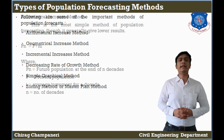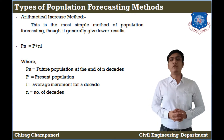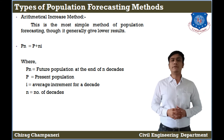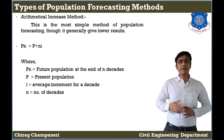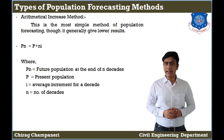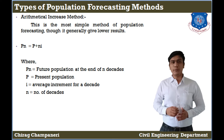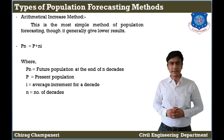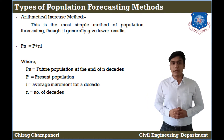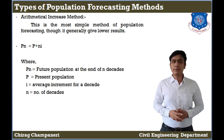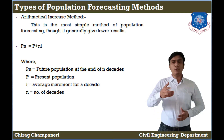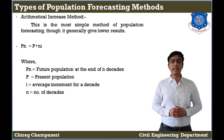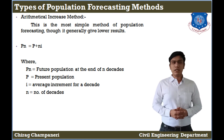First we will talk about the Arithmetic Increase Method. This method is a very simple, common method which we use for population forecasting. The equation is: Pn = P + nI. Here, Pn is the future population at the end of n decades, P is the population in the present year, and I is the average increment for n decades.